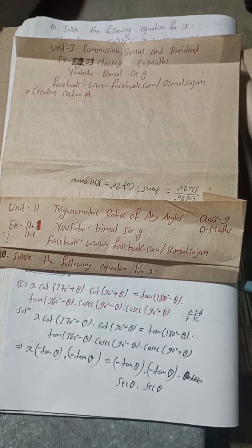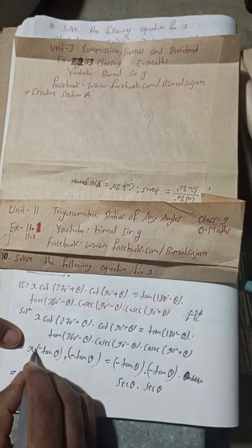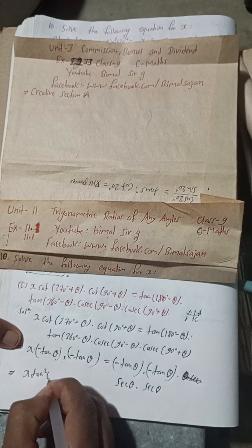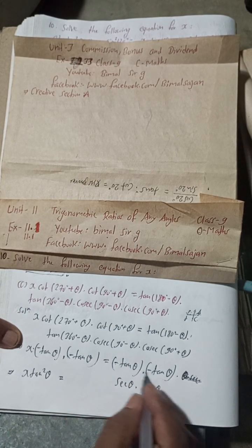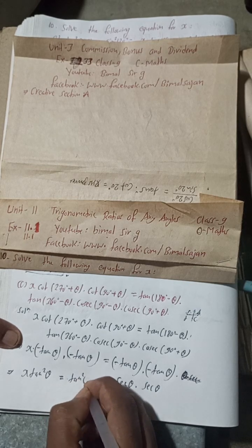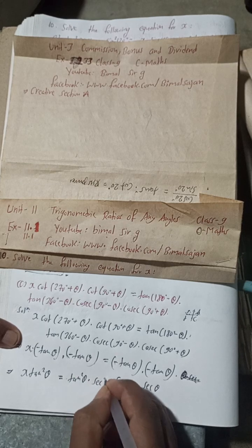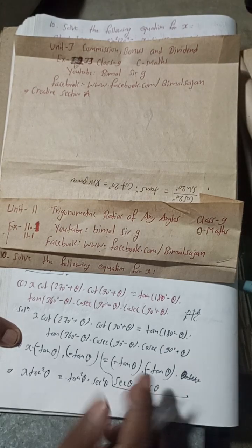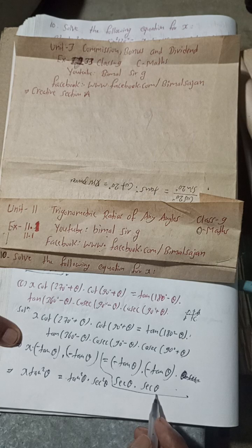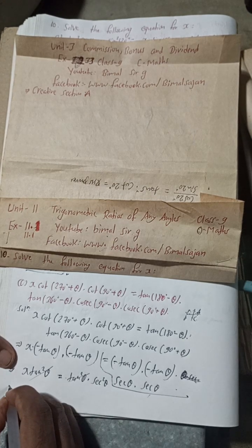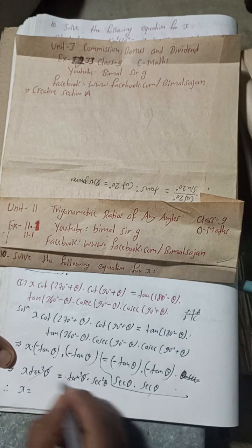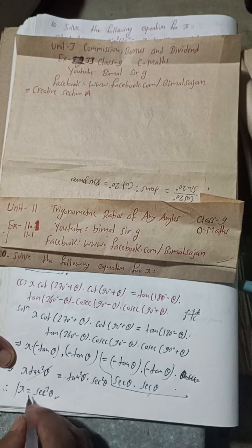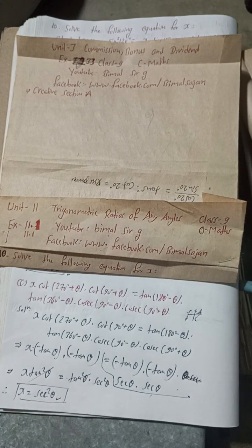Now, minus times minus is plus, so we get X · tan²θ = tan²θ · sec²θ. The tan²θ cancels on both sides, therefore X = sec²θ. This is the answer — the complete solution of question 10C.